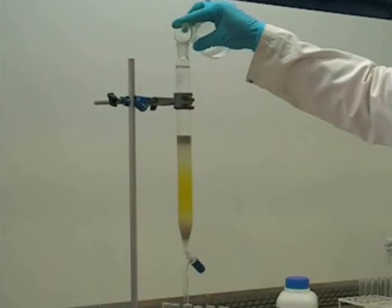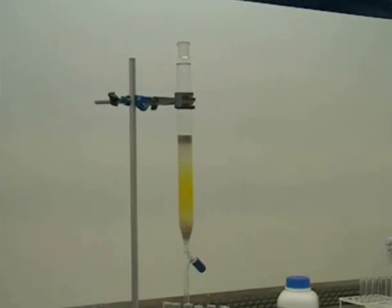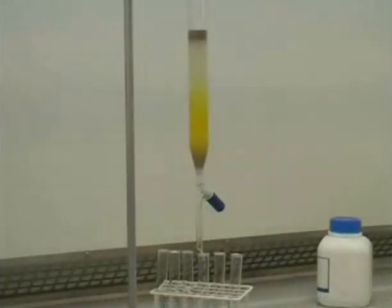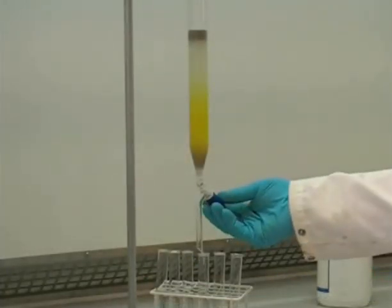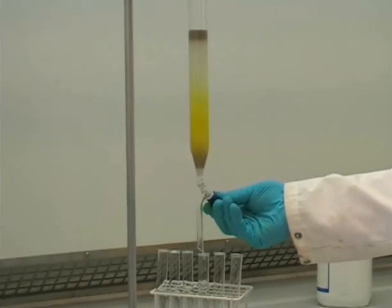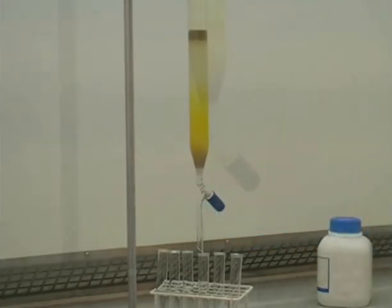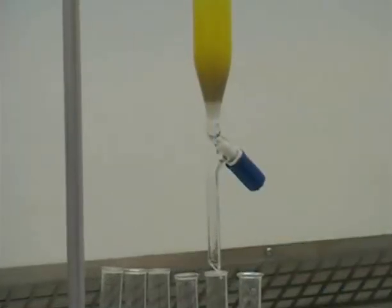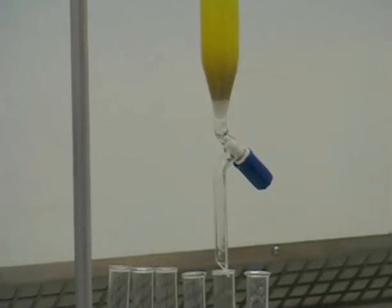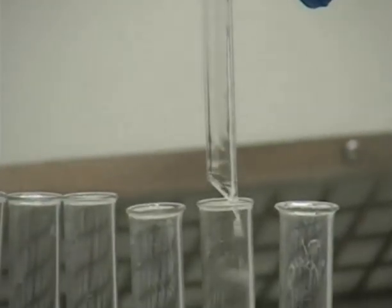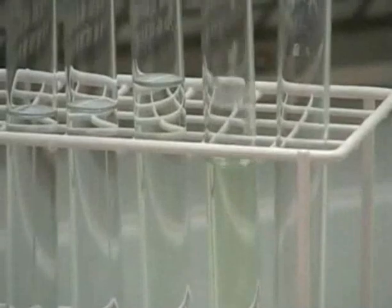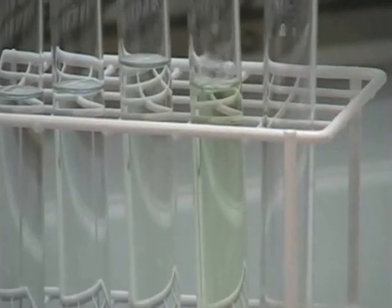And as the level of the eluent approaches the sand, it's important to make sure that you top it up. We can then continue to collect fractions and in this case you can see that the yellow band in the silica is approaching the bottom of the column. If we look closely at this particular fraction, we can see that the solvent has a yellow colour, telling us that our compound is eluting. Of course, in other cases, as mentioned previously, you'd have to use TLC to identify the presence of a compound.